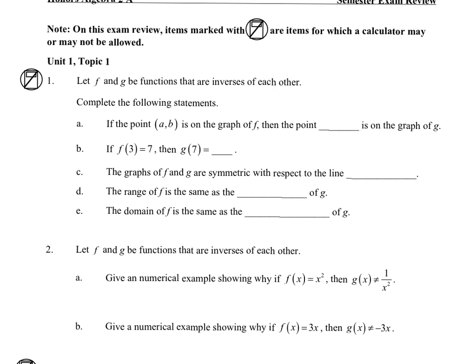For 1a, if the point (a,b) is on the graph, then the point on the inverse would be (b,a). So for 1b, if this is the point (3,7), then on the inverse you're going to get the point (7,3), so this evaluates to 3.